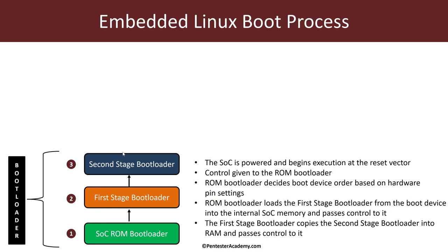The task of the ROM bootloader is to set up some basic hardware and then go about finding the first stage bootloader from a boot device. This boot device could be on a network, over a memory bus, USB, an SD card, and so on. Once the ROM bootloader has located the first stage bootloader, it loads it typically into the SOC's internal memory and passes control to it. The first stage bootloader will then fetch the second stage bootloader, which is loaded into RAM, and passes control to it.